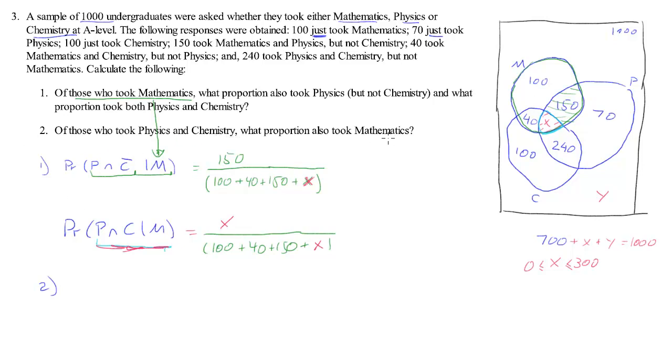Of those who took physics and chemistry, what proportion also took mathematics? So let's write that down first. Now the conditioning information is physics and chemistry. And then what proportion took maths. So physics and chemistry. Let us see where is that. Physics and chemistry. That is this little area. That is physics and chemistry. So we already know that is going to be our denominator. And that is 240 plus, again, our friend, the x.